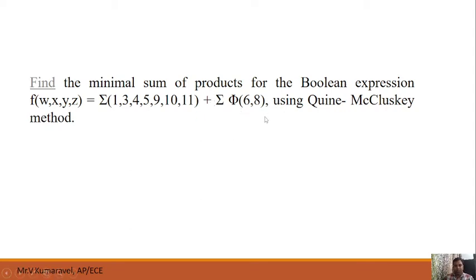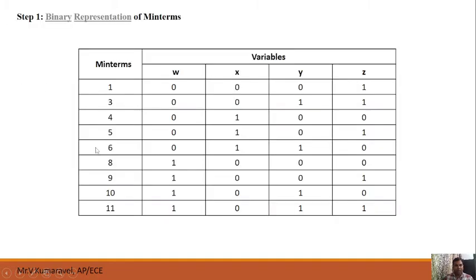The don't care condition is also given, which we also have to consider. So I have listed 1, 3, 4, 5, 6, 8, 9, 10, 11 — where 6 and 8 are don't care conditions. Now we represent their binary equivalents: 1 is 0001, 3 is 0011, 4 is 0100, 5 is 0101, and similarly for 6, 8, 9, 10, 11 — for example, 11 is 1011.